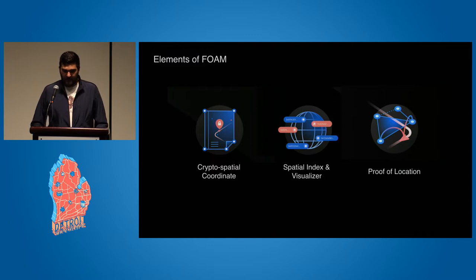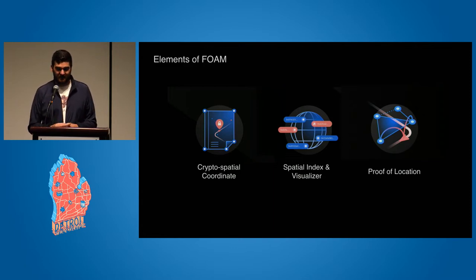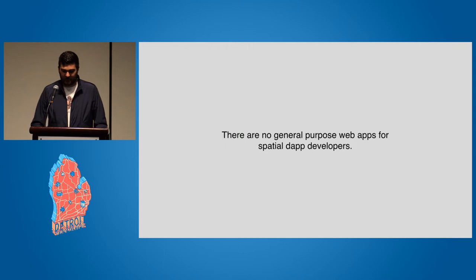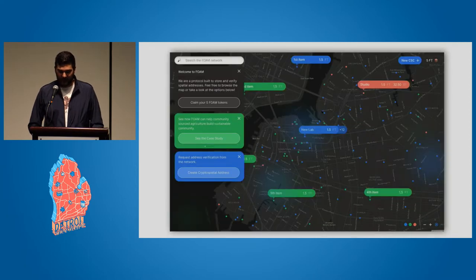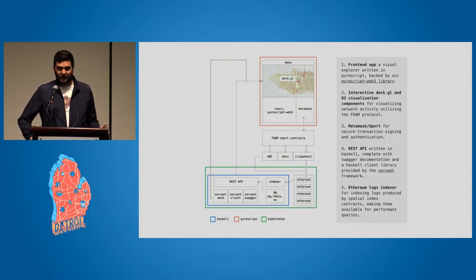This is a visualization of the distribution we had — a bit over a thousand people participated, spread around the world, and they're now using our protocol that was just launched two weeks ago. Our project has multiple elements: what we call a crypto spatial coordinate, which is a location encoding standard; tools to do spatial indexing and visualization; and ultimately we're working on how to prove location in a decentralized way. I'm going to focus on the spatial index visualizer we built, which is a React web app using the Mapbox SDK, built on OSM as a base map, and we also use Uber's deck.gl to visualize the data.